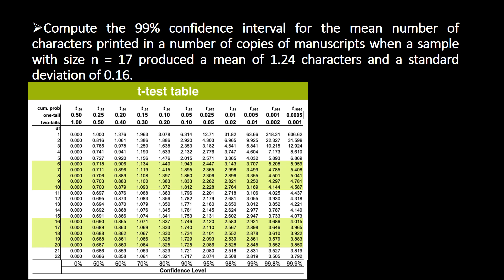Let's work through an example. Compute the 99% confidence interval for the mean number of characters printed in a number of copies of manuscripts, when a sample of size n = 17 produced a mean of 1.24 characters and a standard deviation of 0.16. We identify our given information first before computing. The confidence level is 99%.